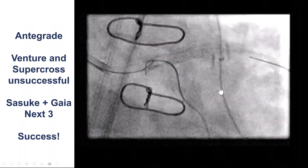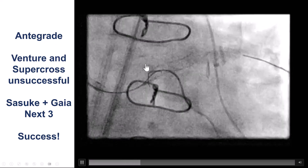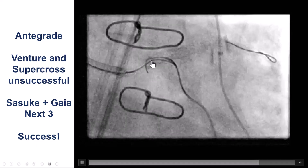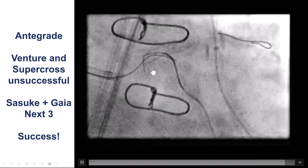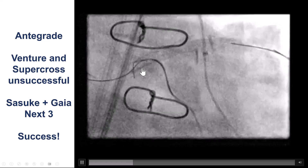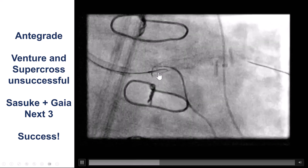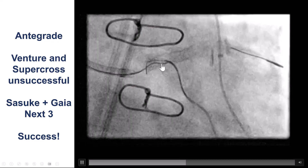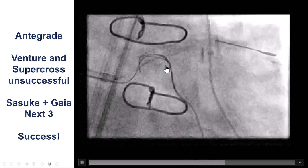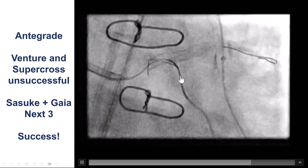We then decided to go antegrade. We did multiple attempts — we used a Venture microcatheter, one of the few remaining ones, which didn't work. We used a 120 Supercross, which also did not work. But eventually, using the Sasuke Dual Lumen along with the Gaia Nextreme, we were able to puncture antegradely following the course of the retrograde microcatheter and wire.